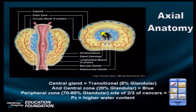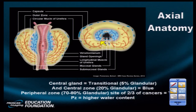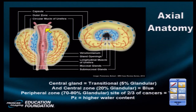The prostate gland is divided into a central region and a peripheral region. The central region is composed of the transitional zone — which in younger patients is not that big but houses about 5% of the glands — and the central zone, which is also relatively thin when you're young. Together these make up the central portion of the gland. The peripheral zone has most of the glands — as many as 75% — and about two-thirds of cancers, sometimes reported as up to 70%, which makes sense because that's where most of the glands are.